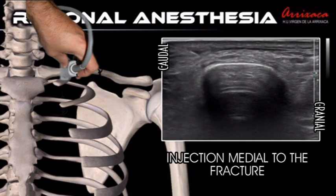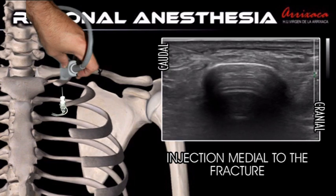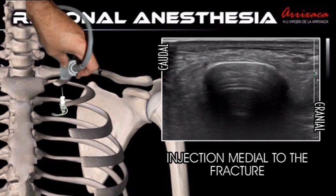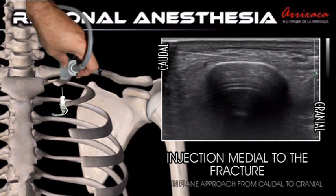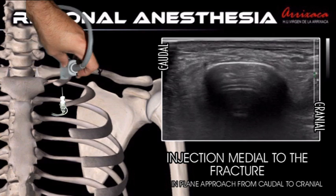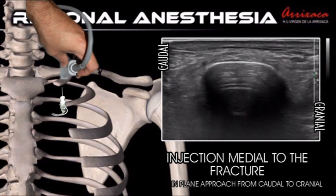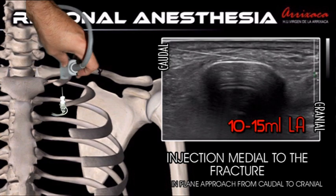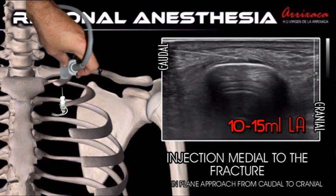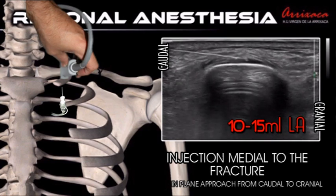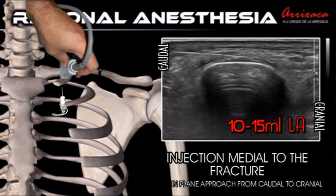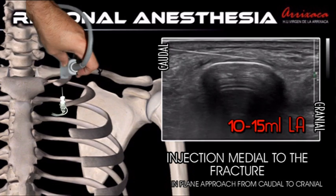The needle is inserted in-plane from caudal to cephalic, and the local anesthetic is injected between the periosteum and the clavipectoral fascia. This is a simple and highly safe procedure that will provide anesthesia and prolonged analgesia for mid-shaft clavicle fractures.